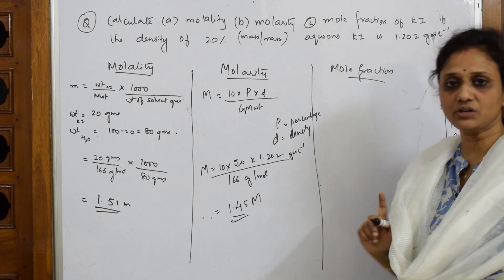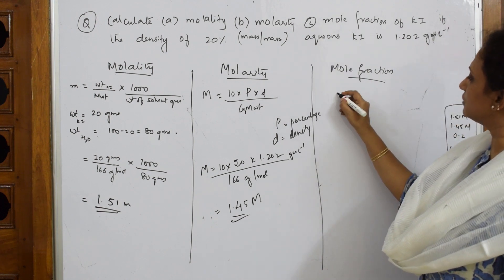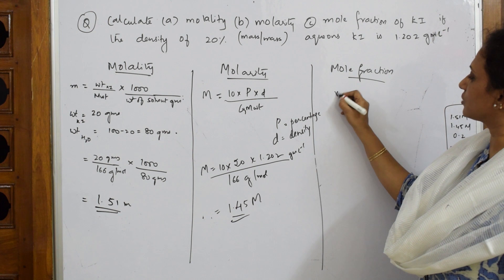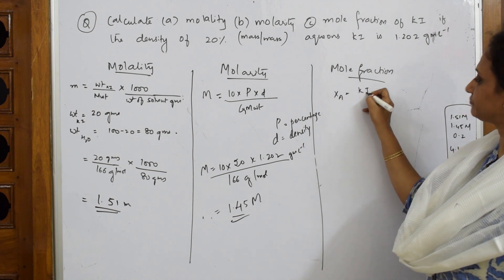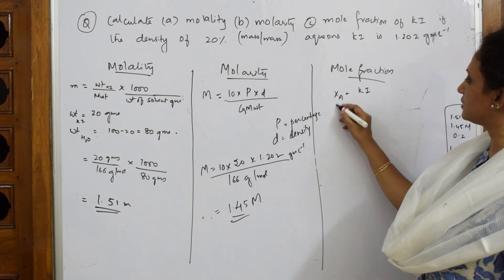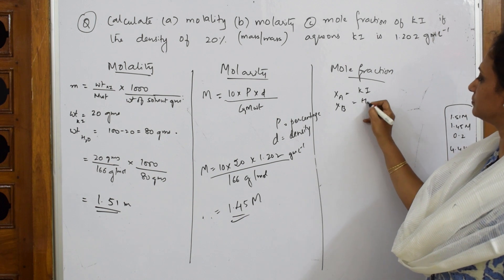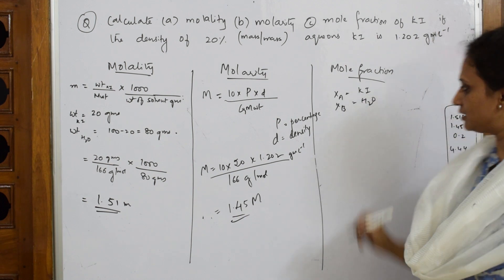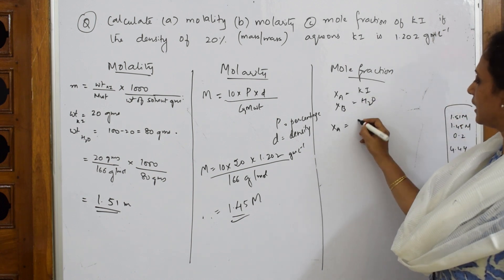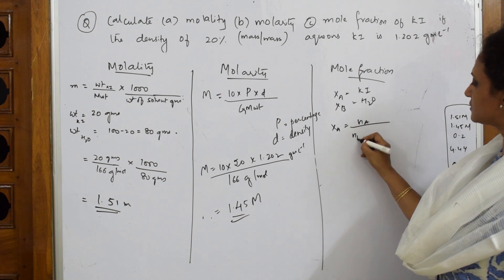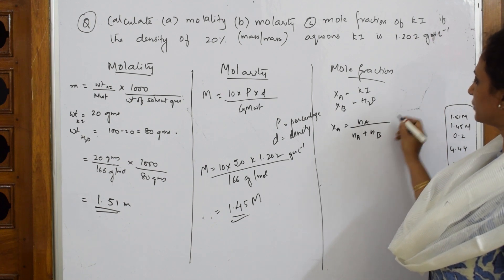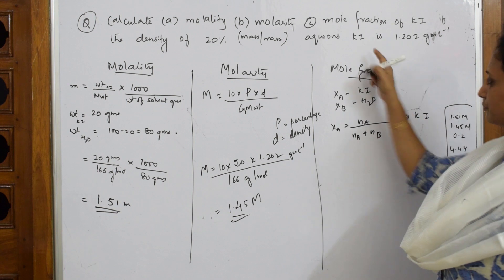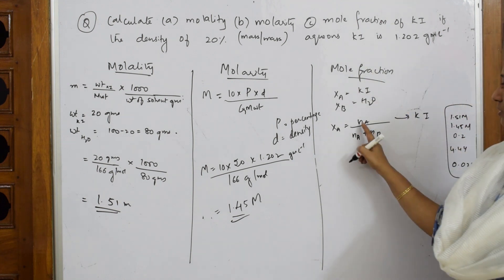For which one should I calculate mole fraction? Mole fraction of KI. Mole fraction formula is, if I take Xa is KI, Xb I'm going to take it for water. According to the formula, Xa is equal to Na by Na plus Nb. This is for potassium iodide. I have to find that. Number of moles.